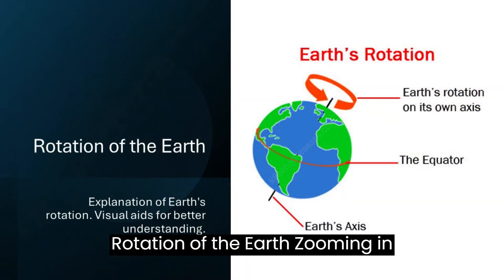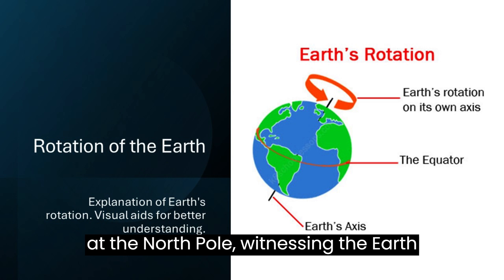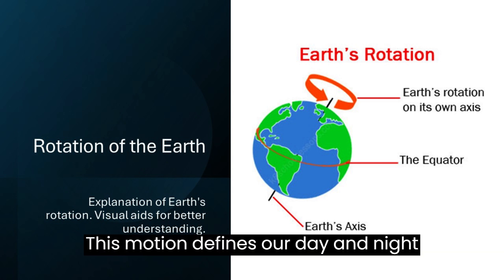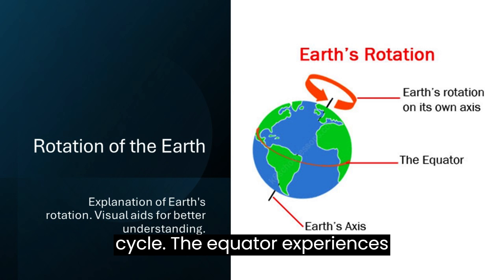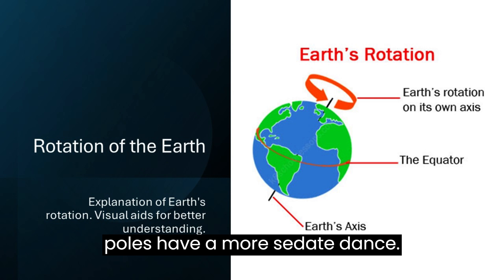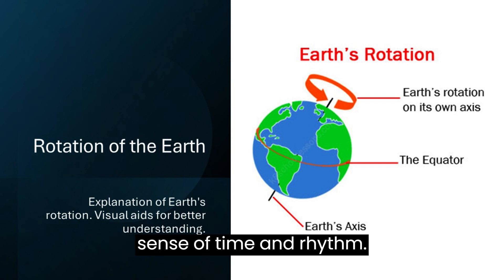Zooming in on Earth's rotation, imagine standing at the North Pole, witnessing the Earth turn counter-clockwise. This motion defines our day and night cycle. The equator experiences the fastest rotation, while the poles have a more sedate dance. It's this rotation that gives us our sense of time and rhythm.